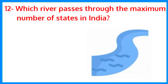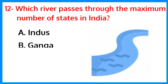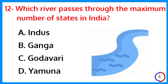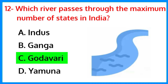Which river passes through the maximum number of states in India? The correct answer is option C — Godavari.